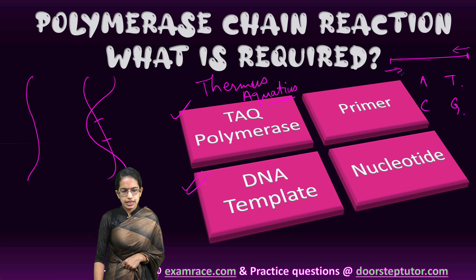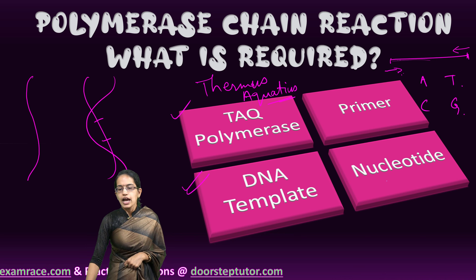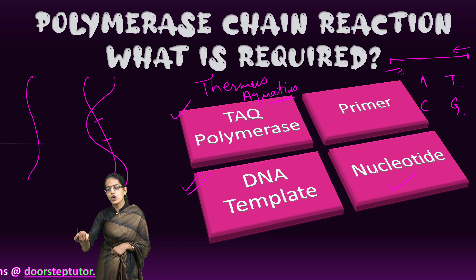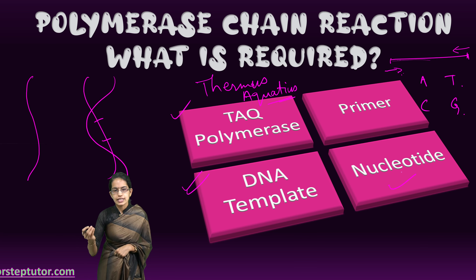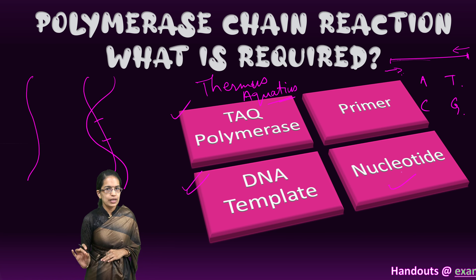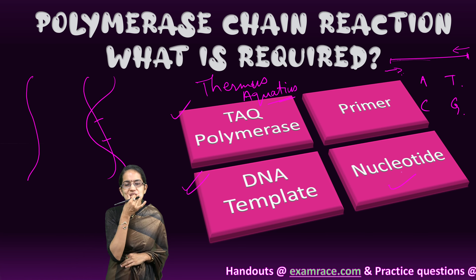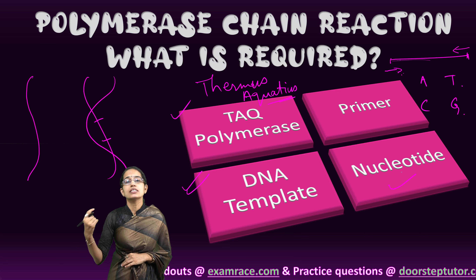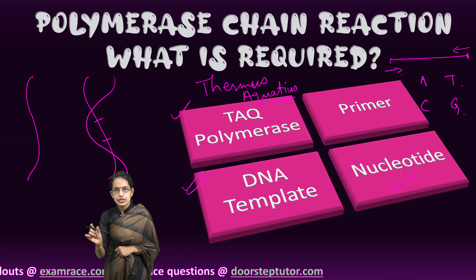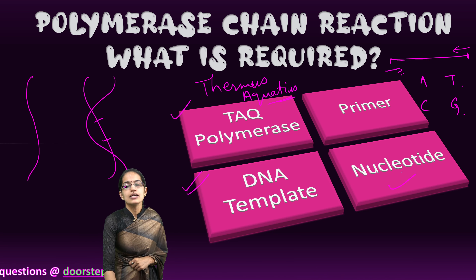The third requirement is the DNA template — the segment which is to be amplified. The fourth requirement is nucleotides, which are the building blocks for any DNA synthesis. So the four requirements are: Taq polymerase, primer (a short nucleotide series that starts the reaction), the DNA template segment, and nucleotides.